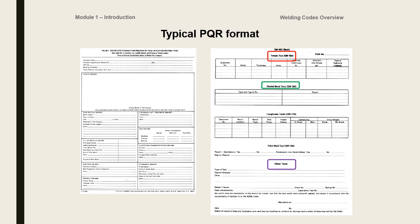Here's an example of an ASME Section 9 suggested format for a procedure qualification record. You address all essential variables, and may address non-essential variables if desired. Do not fill in every blank — if you do, you'll get yourself into trouble. If you did not use post-weld heat treatment, put 'none' — don't put 'NA.' It is applicable, you just didn't do it, so 'none' is better than 'NA.' The second page is where you put all your guided bend tests, tensile tests, and other tests. You sign at the bottom with manufacturer, date, and all that, then staple whatever supporting documentation you received from the lab.